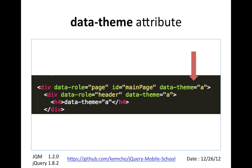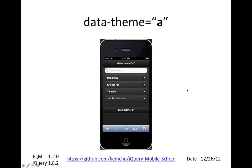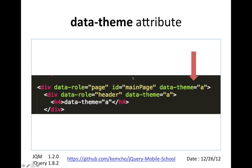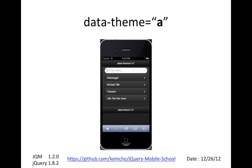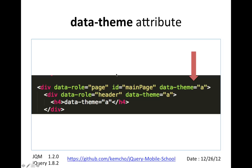The data-theme attribute is what you use to activate a particular built-in theme. For example, data-theme A indicates that you want this page to show everything using theme A. It looks like this — it has a dark black color theme and white font, with a lot of colors, gradients, icons, and font style applied automatically.